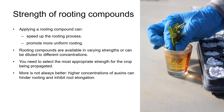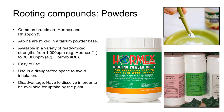Rooting compound powders have the auxins mixed into a talcum powder base. The most common commercial brand is Hormex, which has just IBA in it. It's available in a variety of strengths from 1,000 parts per million for really easy-to-root material to 30,000 parts per million for very hard-to-root material, such as English Yew and English Holly. Powders are easy to use, but they can blow around, so make sure you're using them in a draft-free space so you don't inhale any of the powder or get it in your eyes.